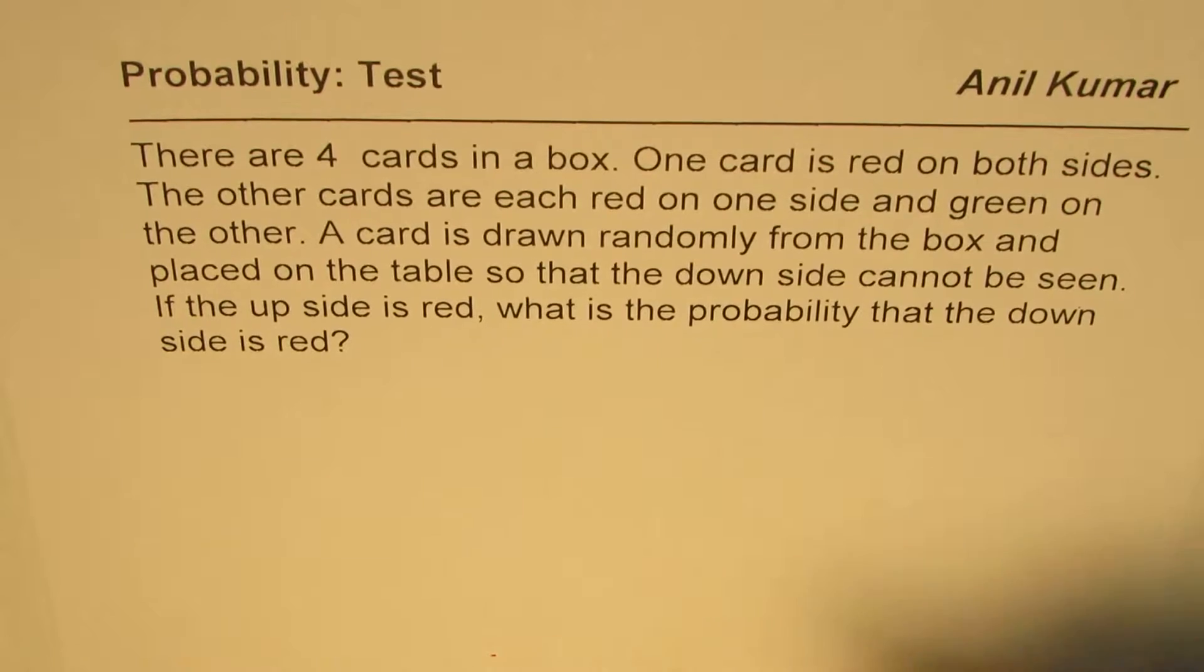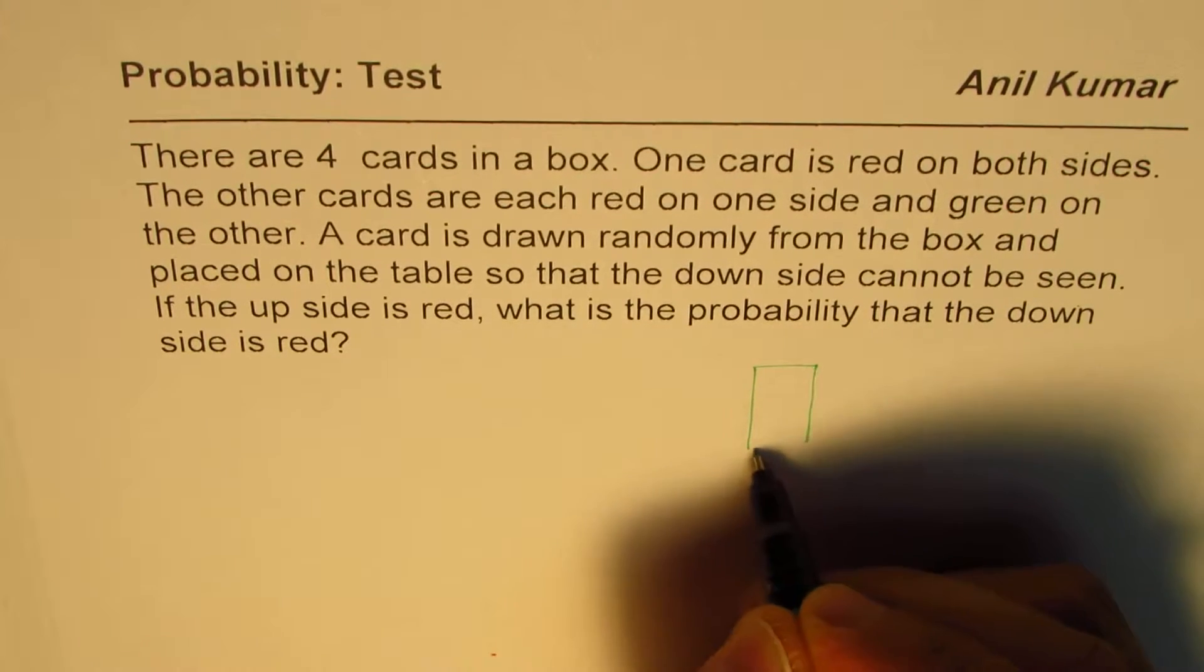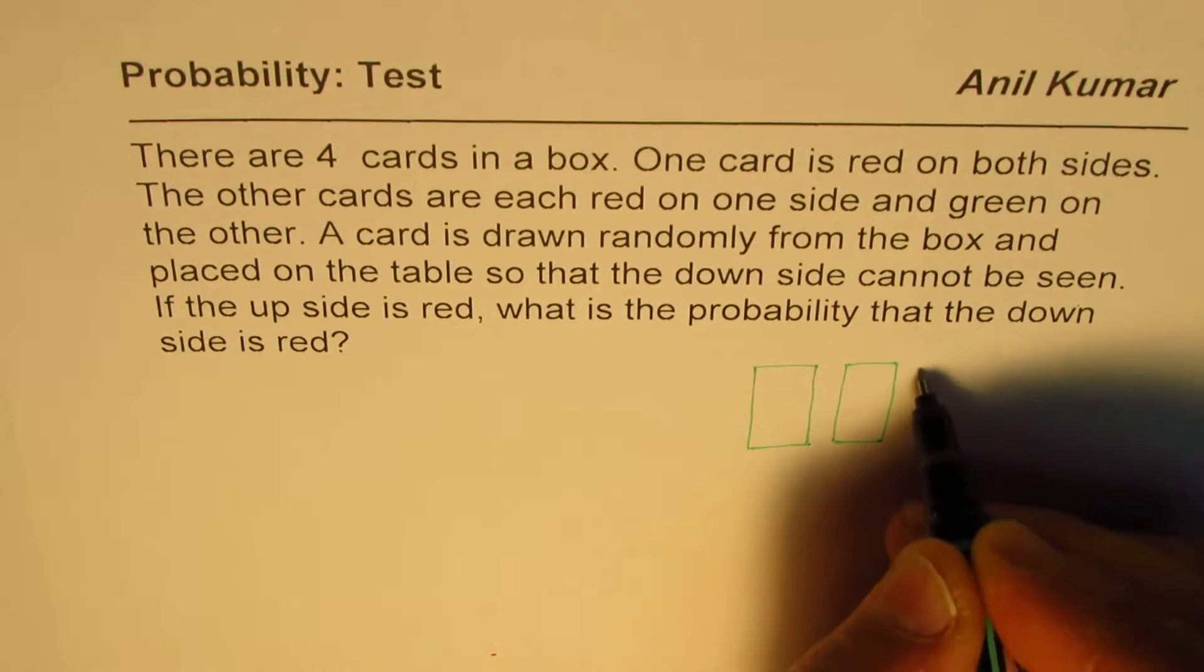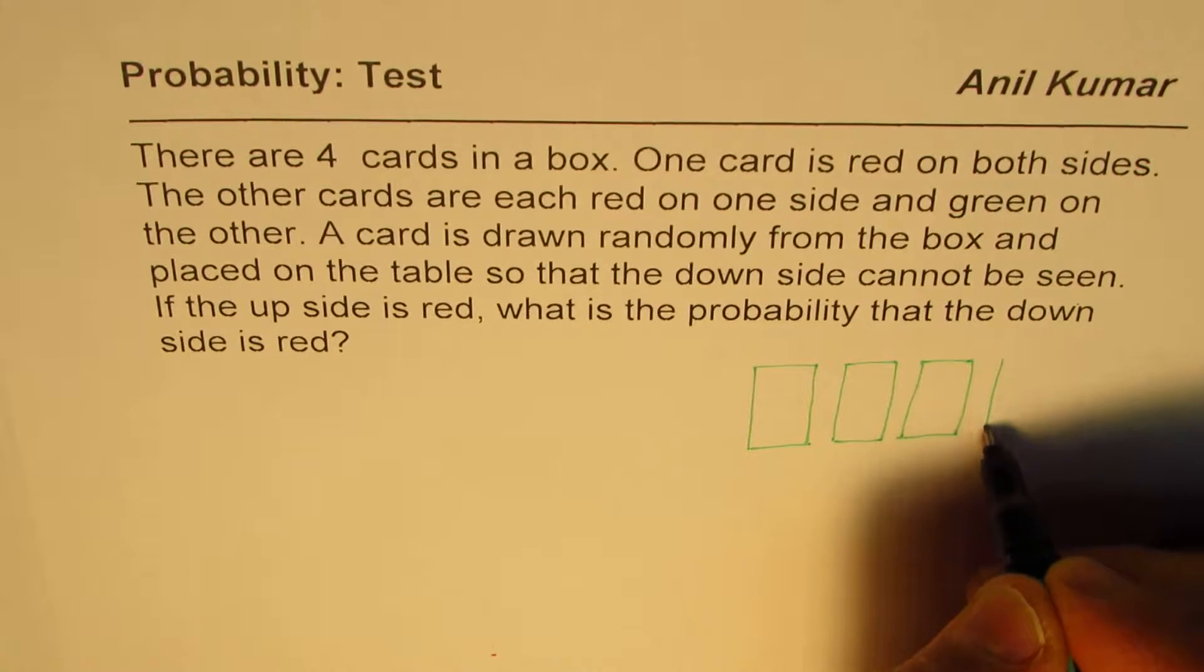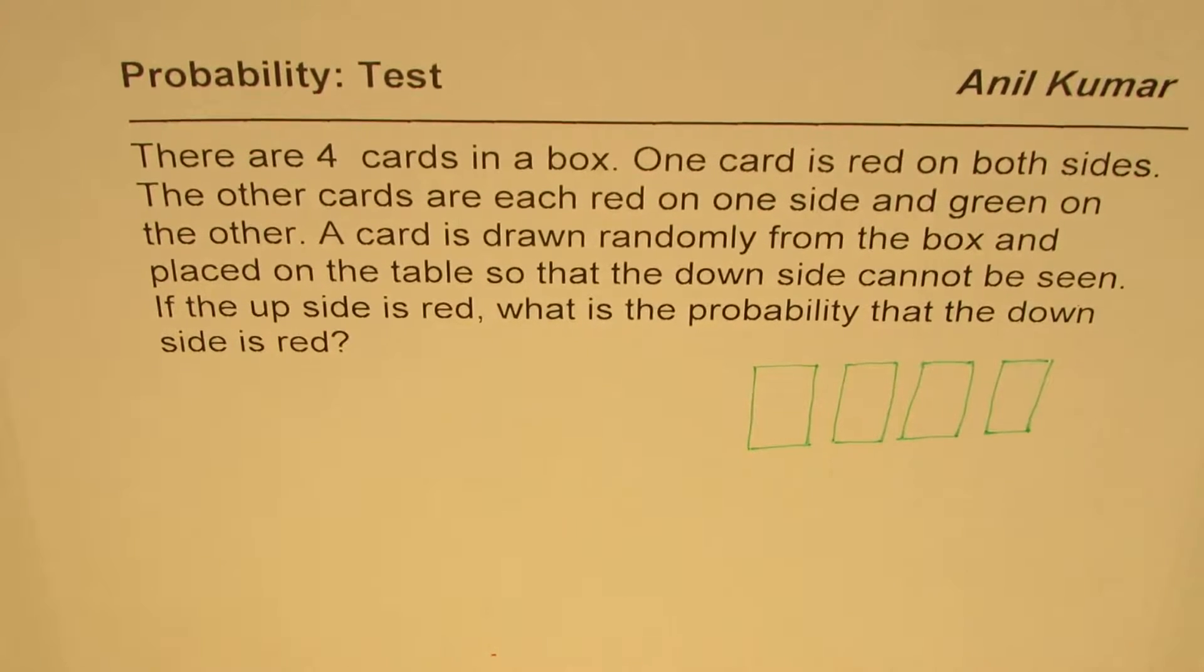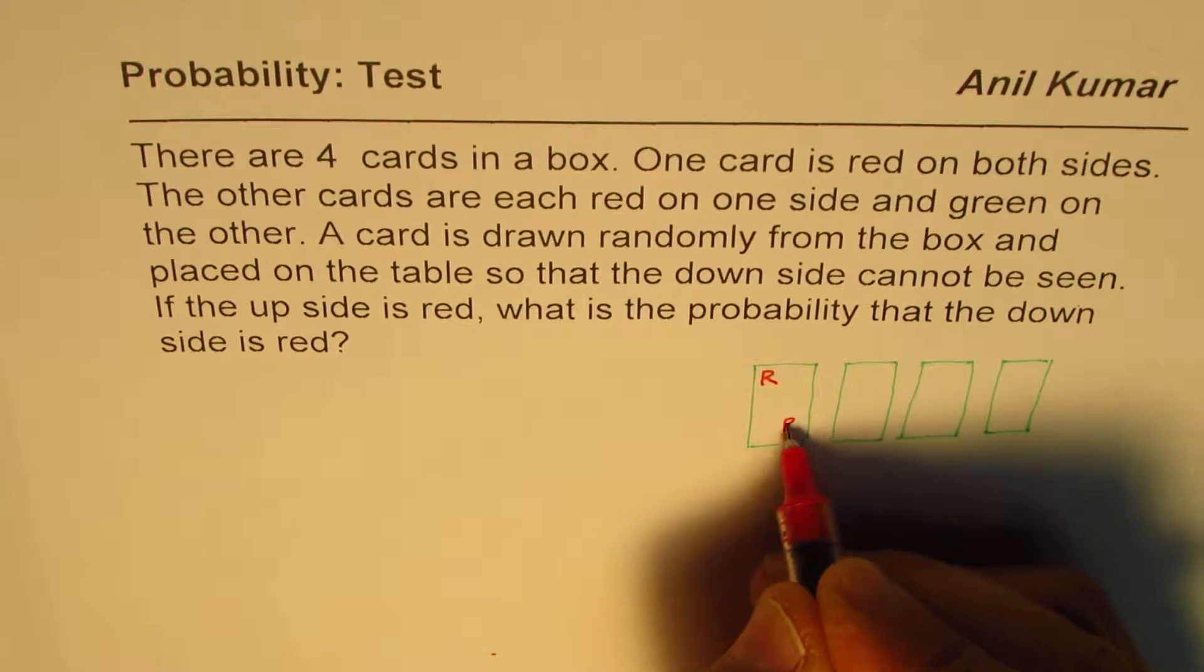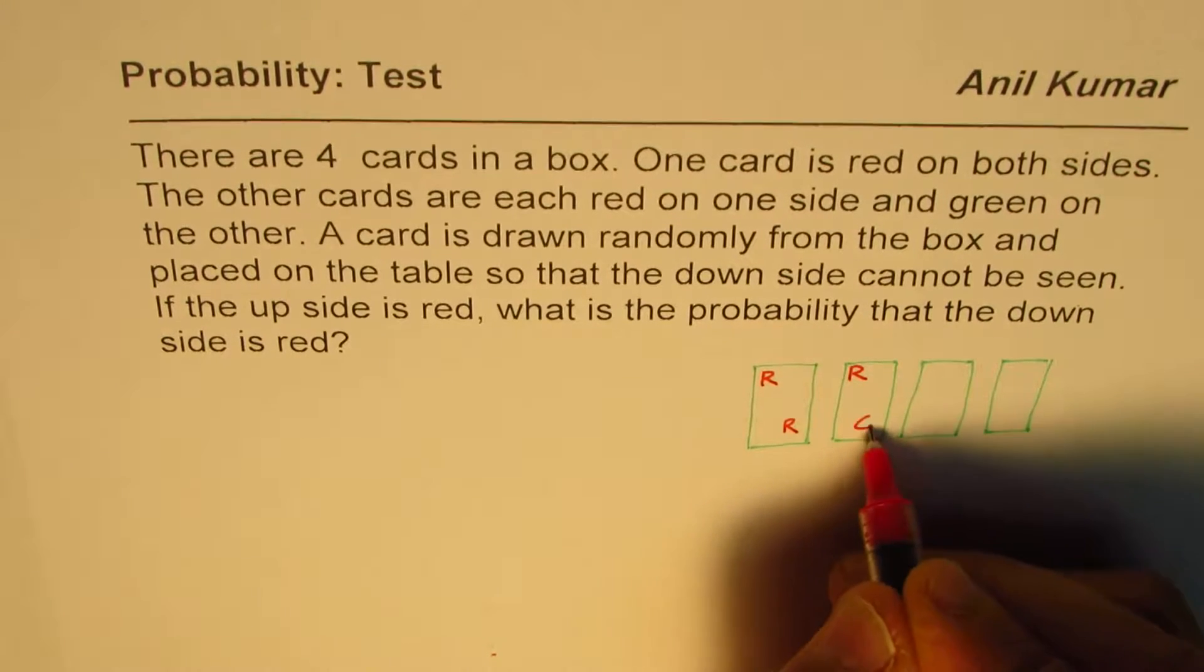What we are given here is that there are four cards. Let's say these are the four cards: one, two, three and four. Out of which one card is red on both sides. Let me write red, red like this. The others are red and green.